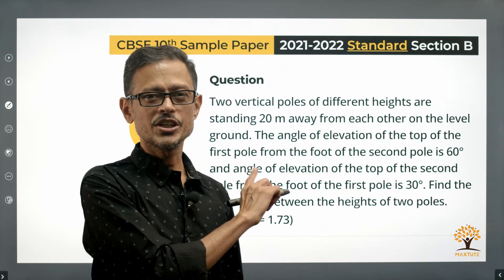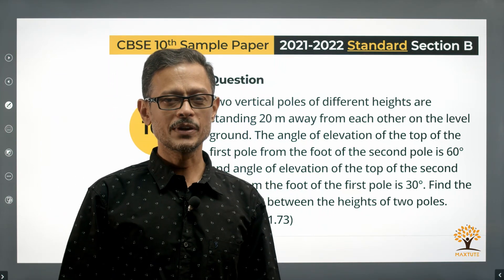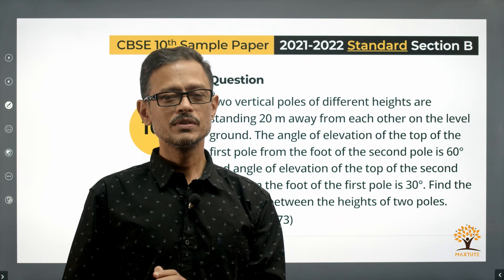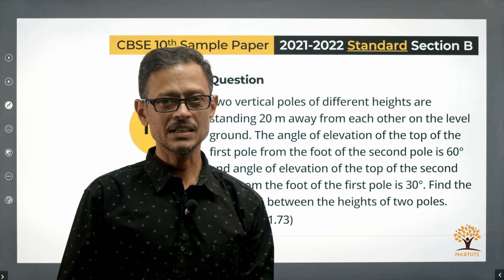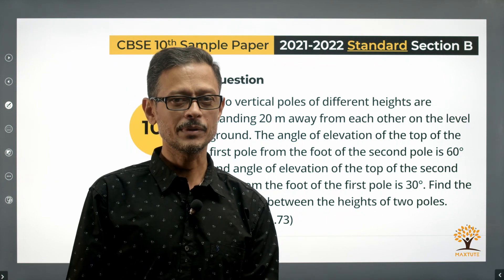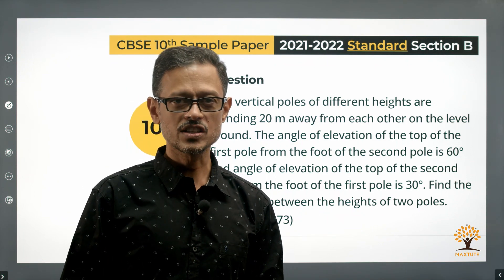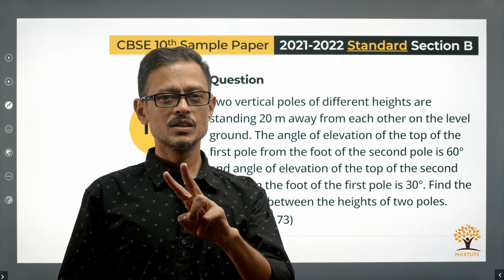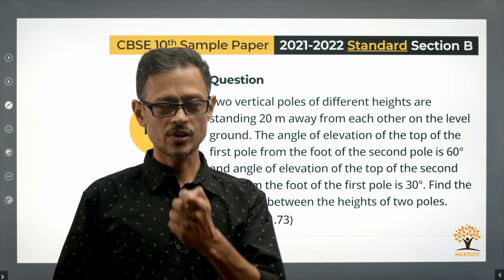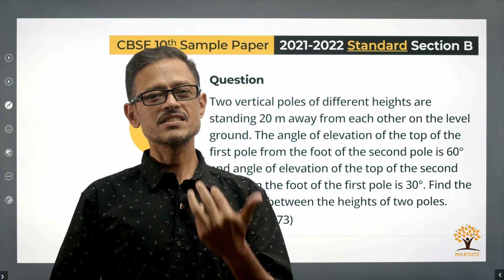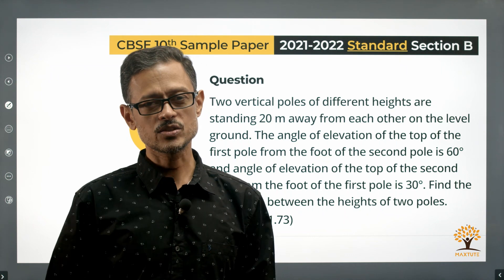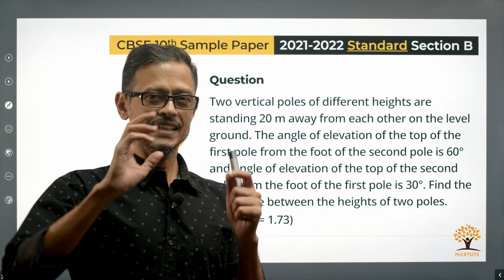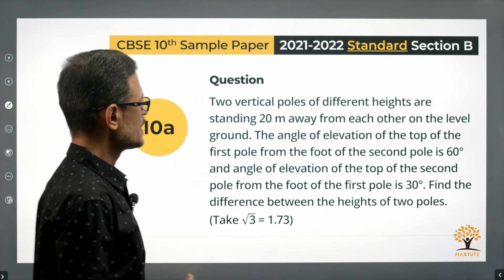Hi everyone. This is a video solution to the sample paper given by the board for 2022 Term 2 CBSE Class 10 Math, standard version of the paper. This is from the chapter Applications of Trigonometry. There are two questions: one is a Section B question with an internal choice, and the other is a Section C question which is a case study based question. Let's get started.